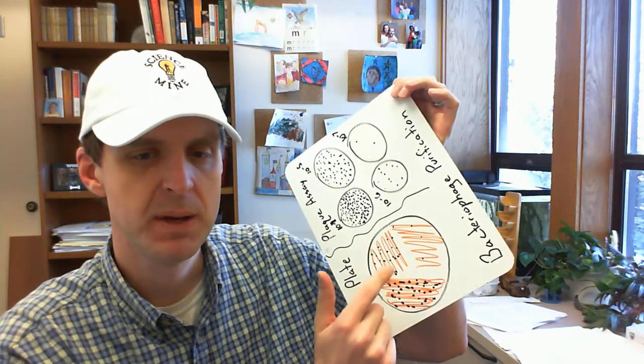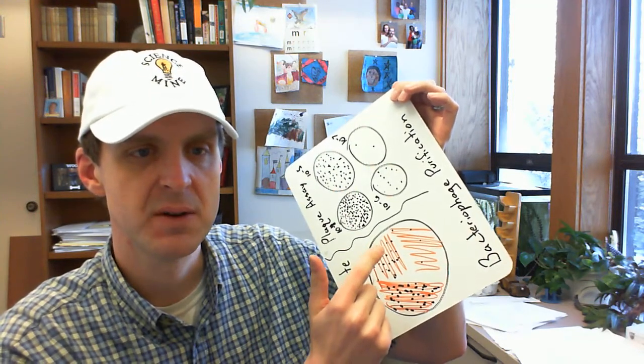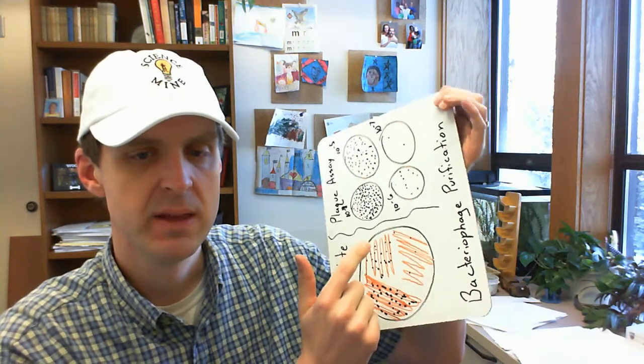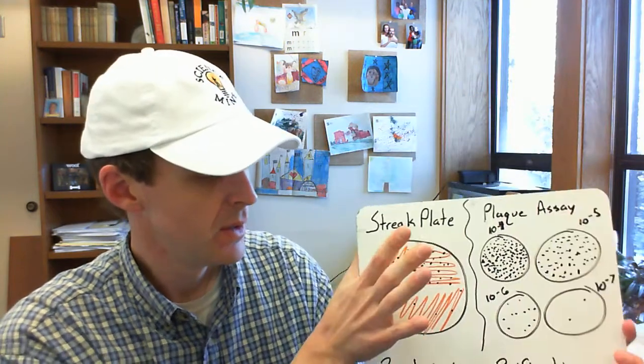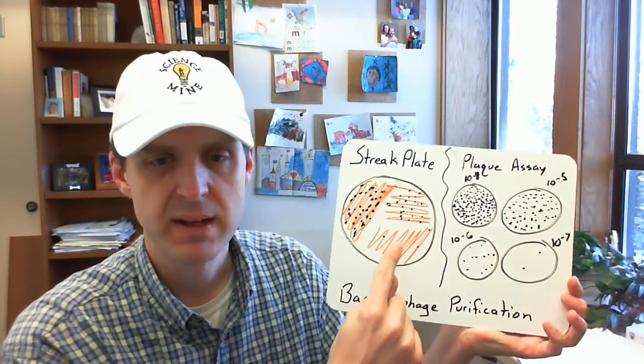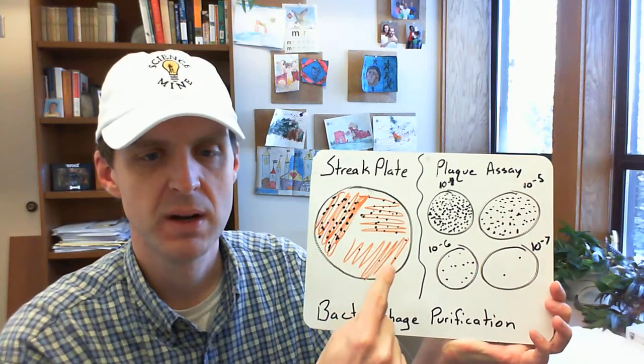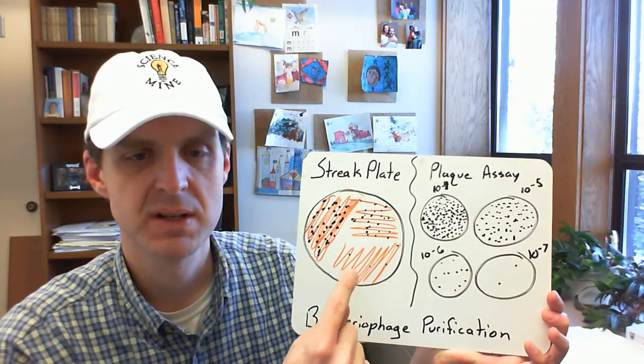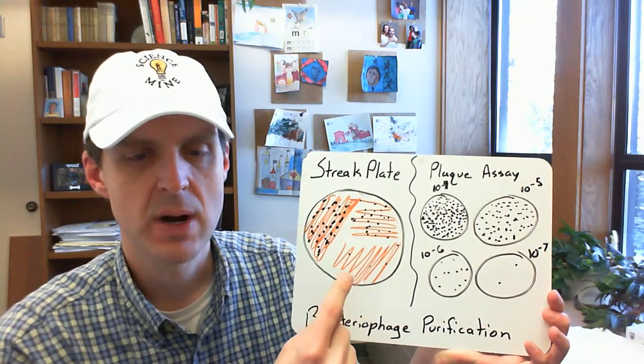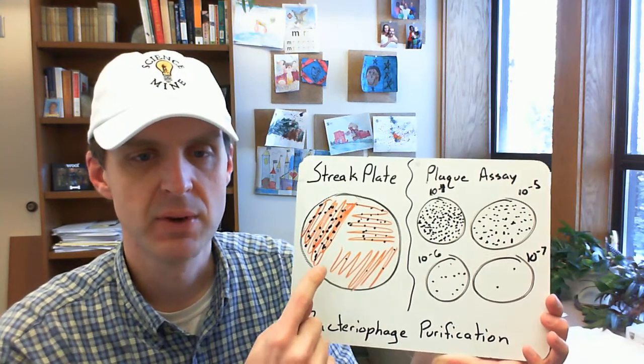The idea is that the bacteriophage plaques are going to be too close together down in this area to pick a well isolated plaque. It's a little bit better in this area and depending on how many you pick up here maybe it's this area that you're gonna find your plaque that you're gonna pick.